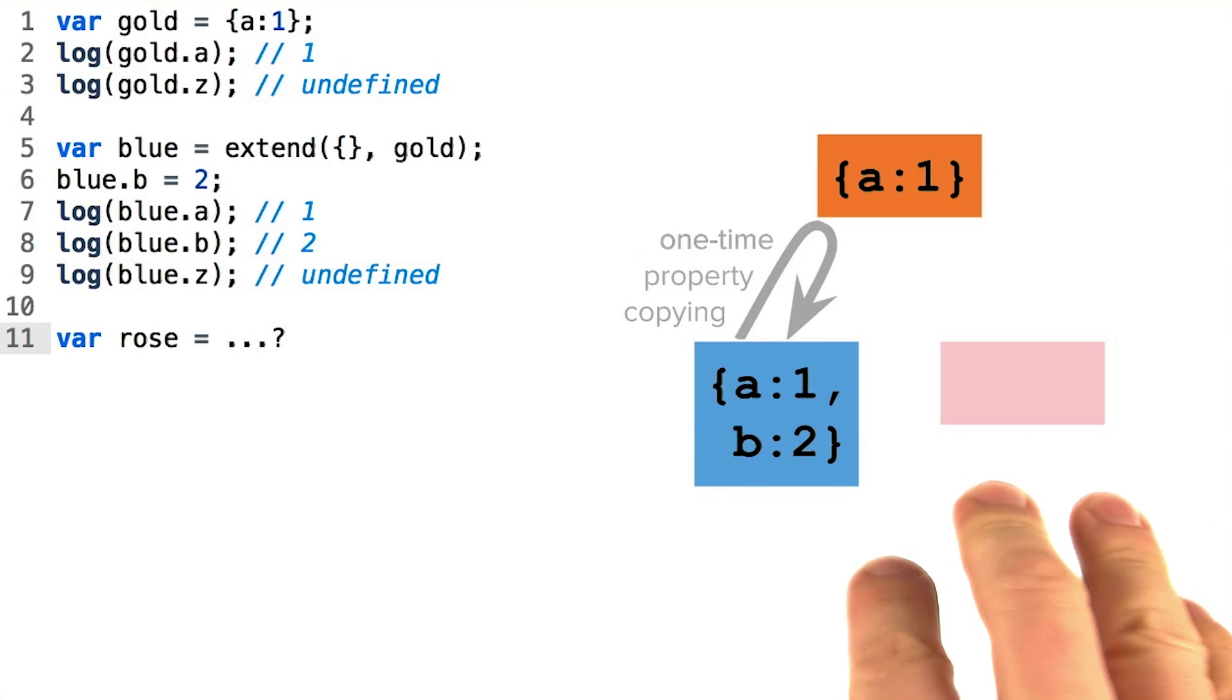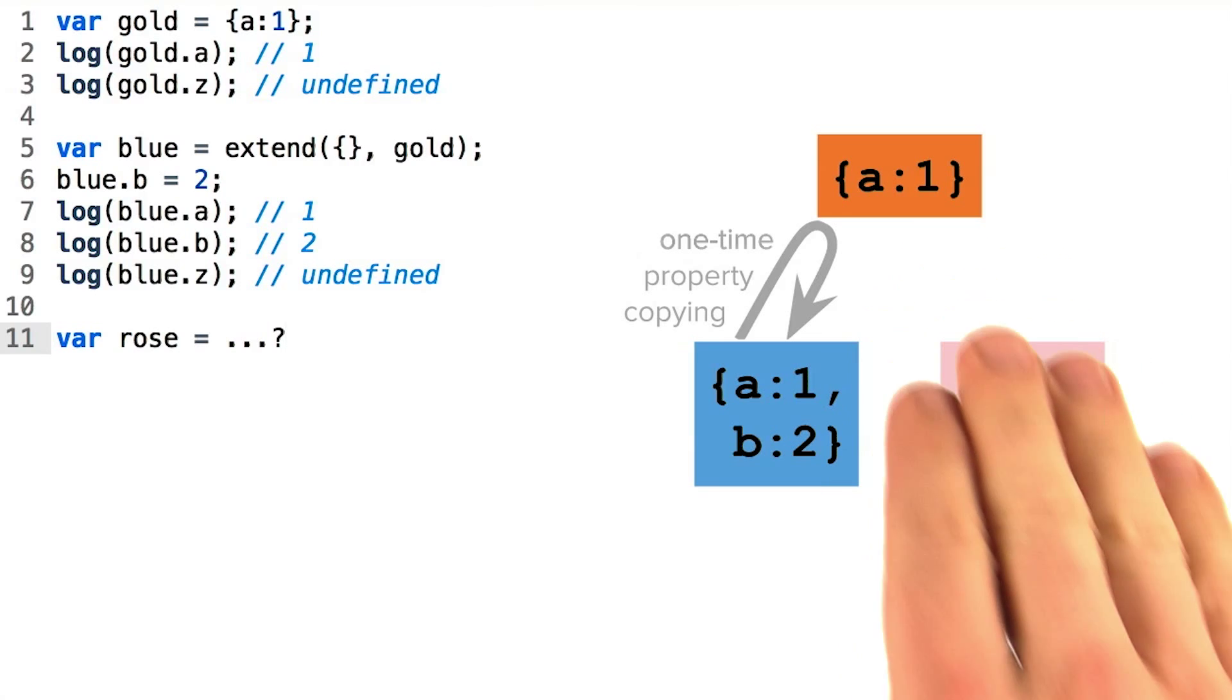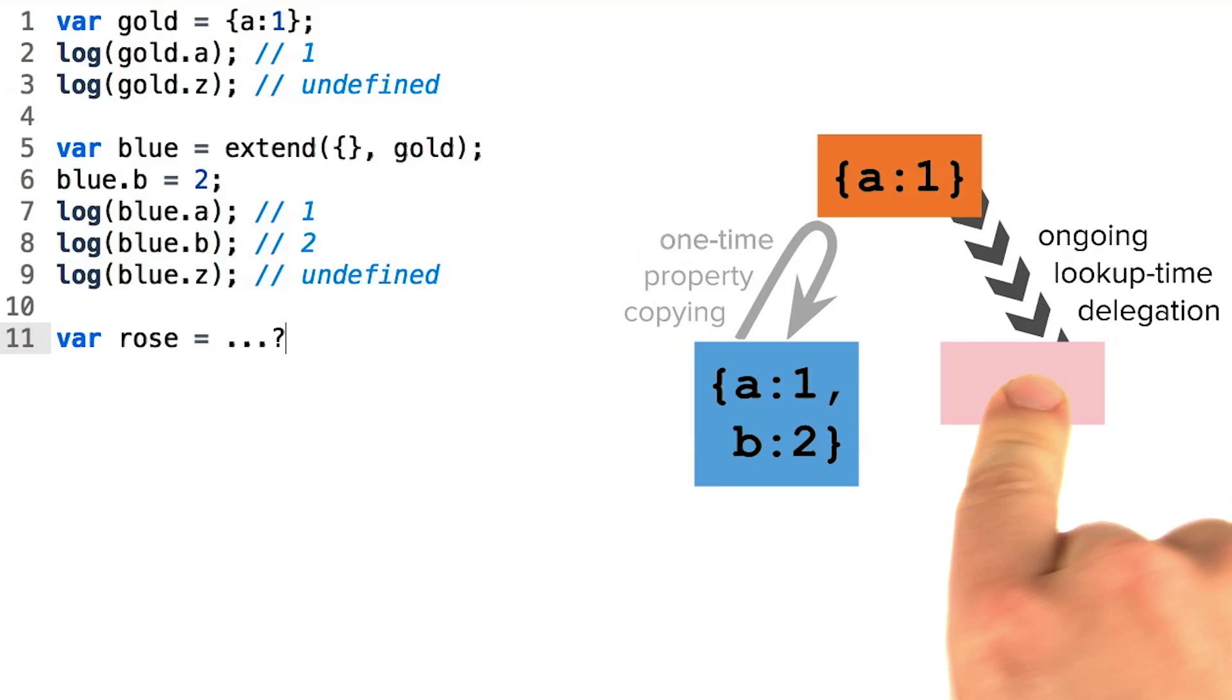Let's make another replica of the gold object, this time using a different strategy to achieve that similarity. Rather than copying the properties over one by one,